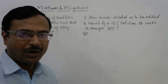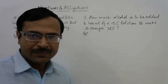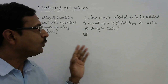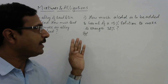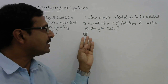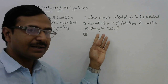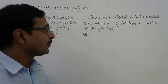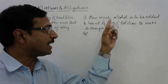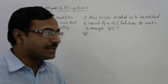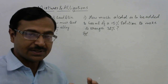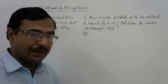The first question on the board is: how much alcohol is to be added to 400 ml of a 15 percent solution to make its strength 32 percent? So in a 400 ml solution there is 15 percent alcohol and we need to increase the strength to 32 percent — how much alcohol is to be added is what we need to find out.